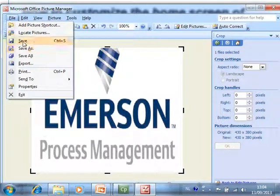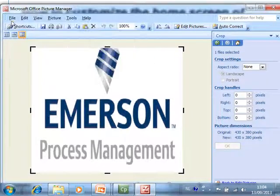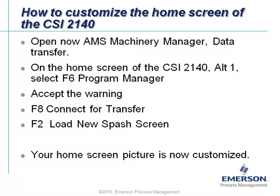Now it's perfect at 430 by 380. I go to File, Save, and close it. Now I have my splash.bmp and I only have to make sure that I copy it to the correct location. Once that is finished I can continue to the next step: open AMS Machinery Manager Data Transfer.